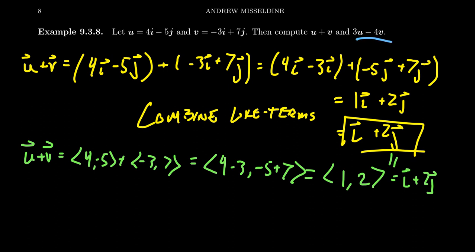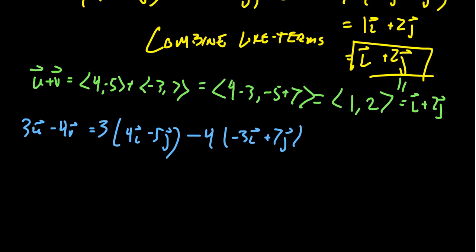Well, can we compute 3u minus 4v? Remembering that u is given as 4i minus 5j, and remembering that v was given as negative 3i plus 7j. What do we do? Well, again, if that intermediate algebra student were to walk in right now, they would be like, okay, let's distribute the 3, let's distribute the negative 4. I'm supposed to simplify this thing. I get 12i minus 15j, then I'm going to get a plus 12i and then a negative 28j.